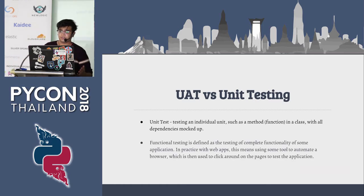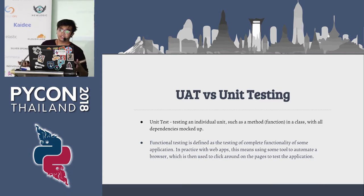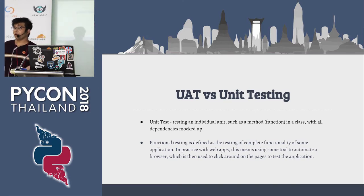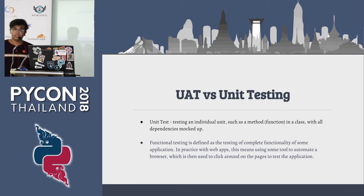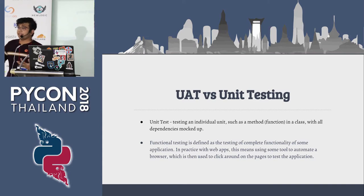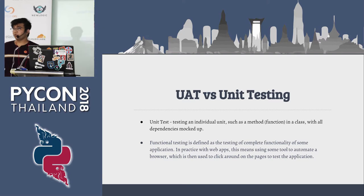Functional testing is different though — you are testing the functionality of the application. In practice with web apps, you can do it manually by clicking around to see if your app works. Or you could do it automatically using Robot Framework test cases, and they come together in one concise way. You can keep reusing the test cases — that's the philosophy behind it.